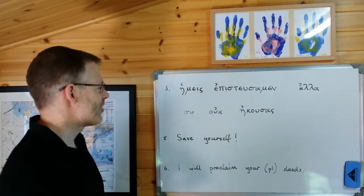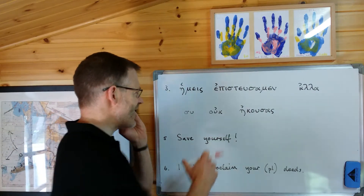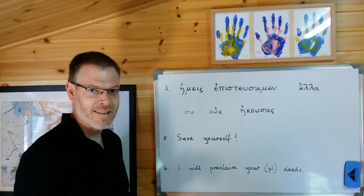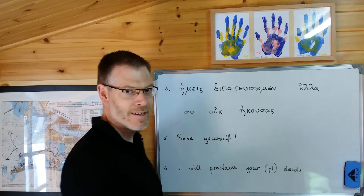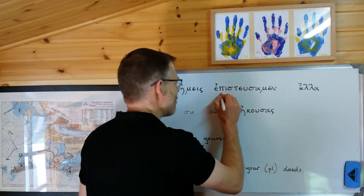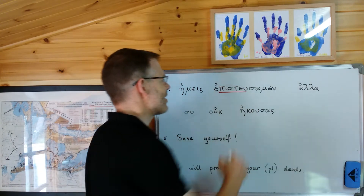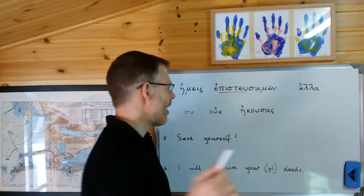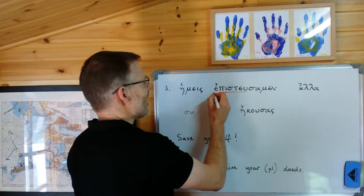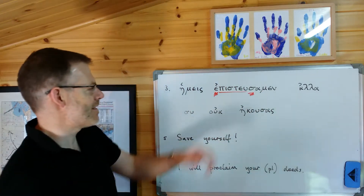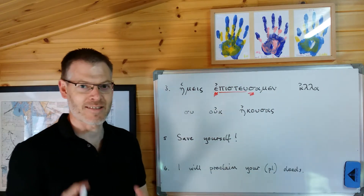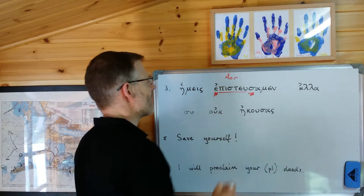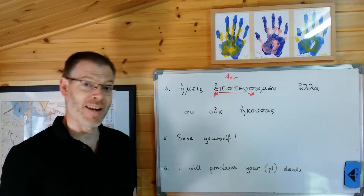Let's go from the top and just find the verb as we normally do. And here's the verb: epistusamen. Press pause for a second, see if you can figure out what this is doing. There's the stem — remember from pistuo, which means I believe. And then we notice next we've got epsilon augment, sigma suffix, which tells us the tense. The tense is aorist. So it's an aorist of pistuo, meaning I believe. So it's I believed.